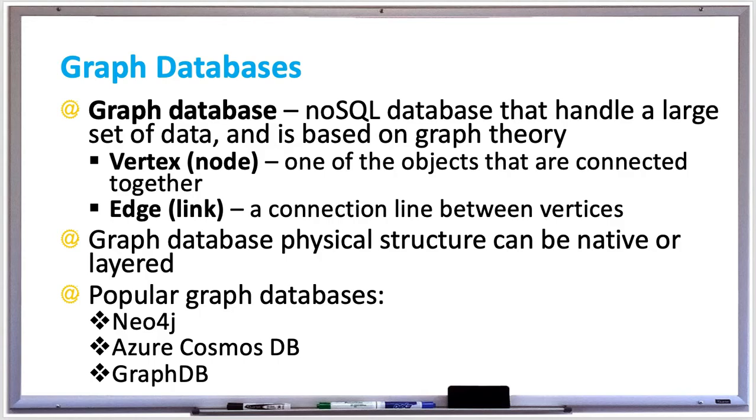Graphs are usually shown as drawings with a vertex, which is a node, typically a point, circle, or rectangle, which is connected together. An edge or link is a connection or relationship line between two vertices, and a property is descriptive data about vertices and edges.